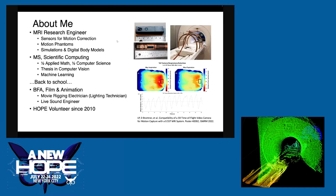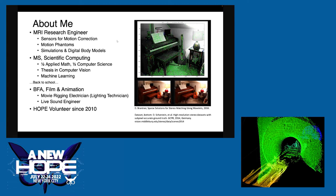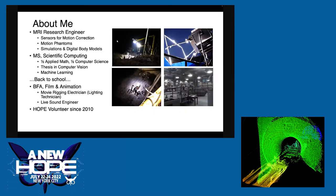I am an MRI research engineer. I work on sensors for motion correction and motion phantoms — a phantom is any test object that is not a person that you put in the MRI for testing. I also work on simulations and body models. I have a master's in scientific computing, which is half math and computer science. I like to say I have a master's degree in floating point errors. I did my thesis in computer vision — solving distances from stereo images and a little bit of machine learning. I went back to school; I used to work on movies. I've been a HOPE volunteer since 2010.